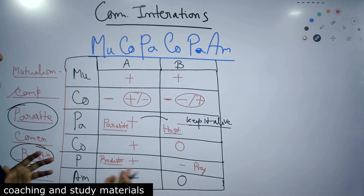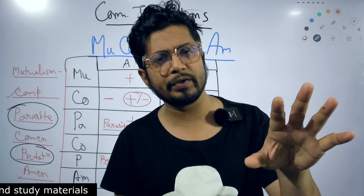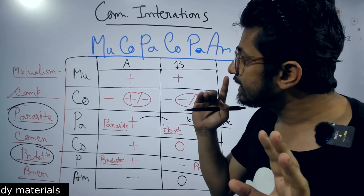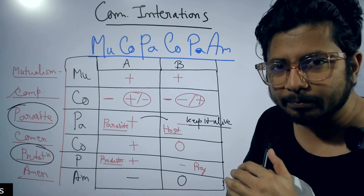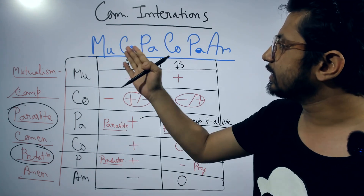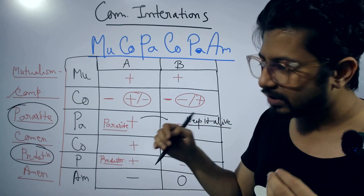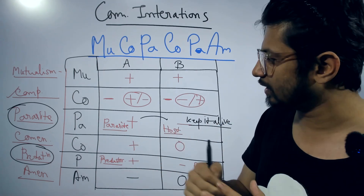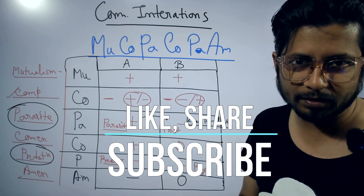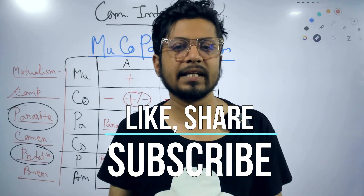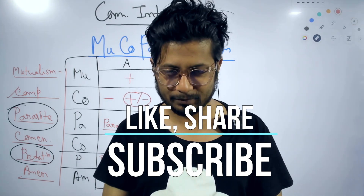These are the six interactions. I have separate videos talking about them with examples, but this gives you a clear idea about the community interactions that are out there. Muko, Pako, Pam is the mnemonic to remember — a gibberish set of letters to help you recall all six. If you like this video, please hit the like button, share it with your friends, and subscribe to get more videos like this in the future. Thank you. Bye.